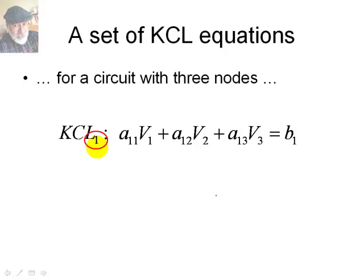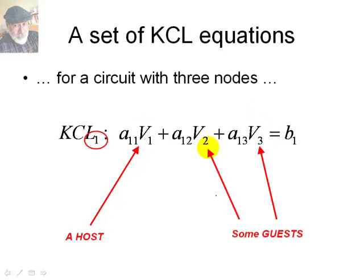That's correct. That's why I will call V1 the host, while V2 and V3 are invited to the party of V1, KCL1. Those are the guests of the equation. This is the host. Those are the guests.